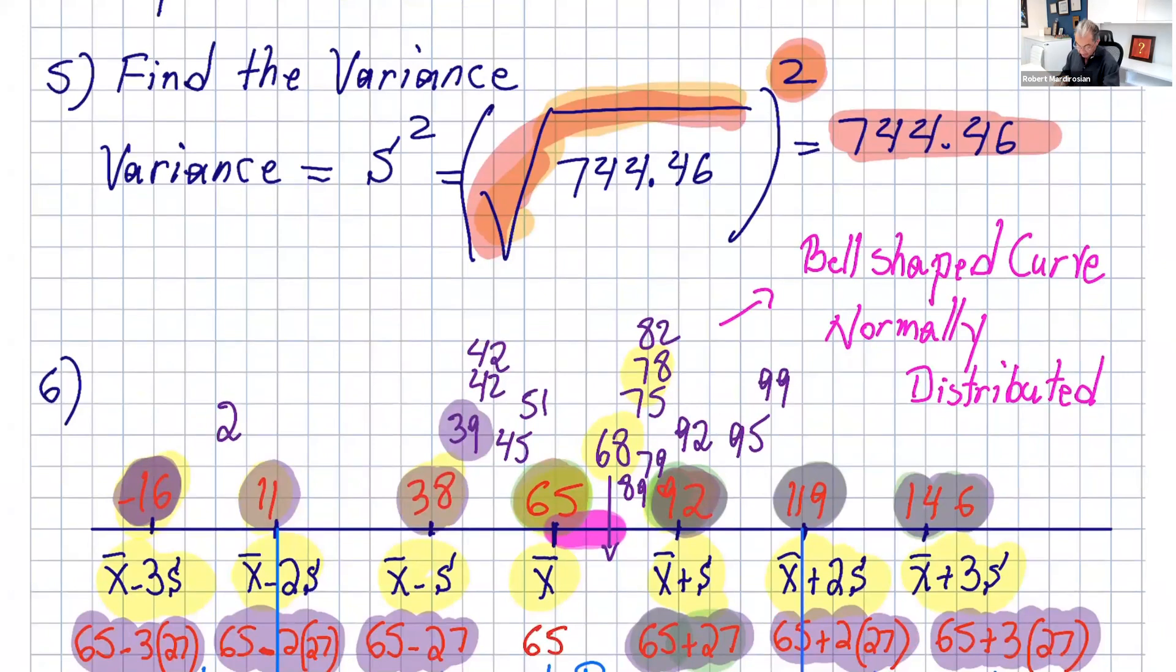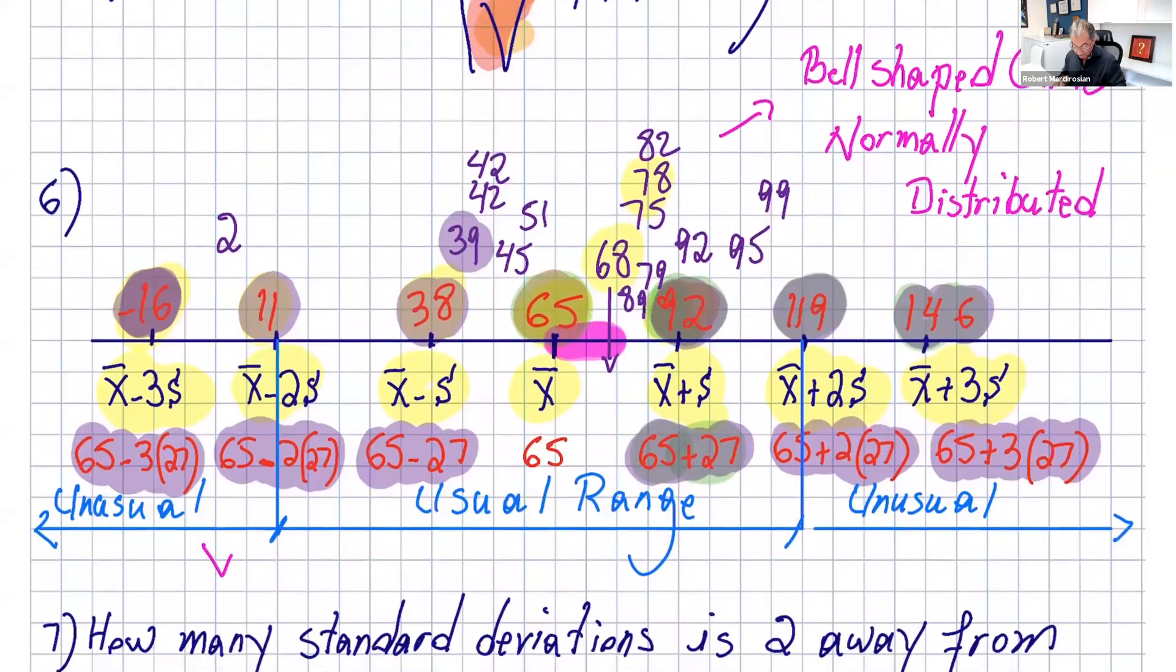Now let's see how to get used to using the standard deviation. You can draw a number line. In the middle, write x-bar for the sample mean, which is 65. To the right, x-bar plus one, two, and three standard deviations. To the left, x-bar minus one, two, and three standard deviations.